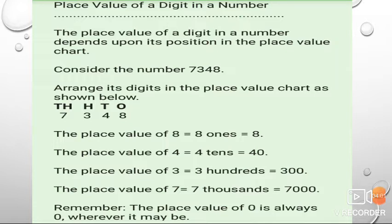The place value of 8 is 8 ones, which equals 8. The place value of 4 is 4 tens, which equals 40. The place value of 3 is 3 hundreds, which equals 300. The place value of 7 is 7 thousands, which equals 7,000. Remember, the place value of 0 is always 0, wherever it may be.